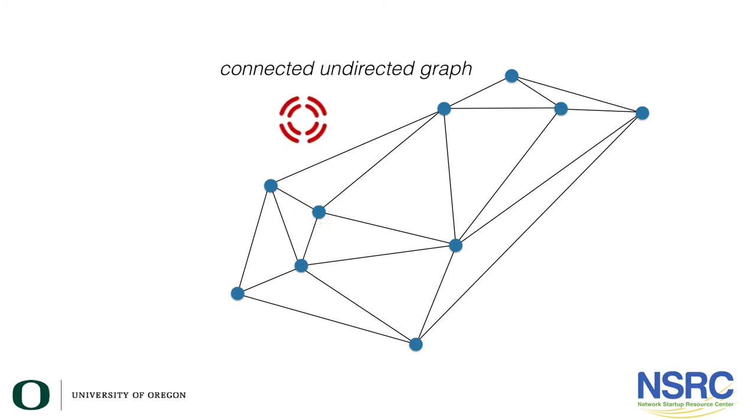This gives us a connected undirected graph. It's a graph because of the different points that we've plotted. It's connected because we have lines connecting them. It's undirected because we do not have arrows on those lines that connect them.